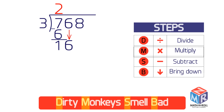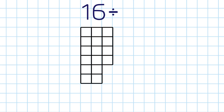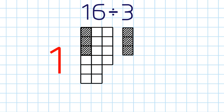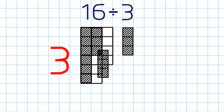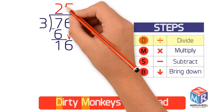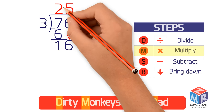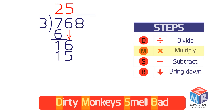Now ask how many times 3 goes into 16 — that is, what's 16 divided by 3? The answer is 5 with a remainder, so write 5 above the 6. Then multiply 3 by 5 to get 15. Write the product under 16 and subtract 15 from 16 to get 1.